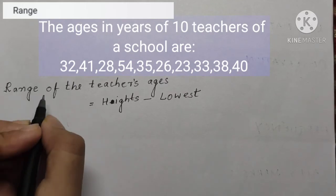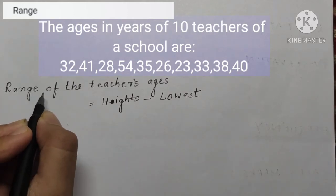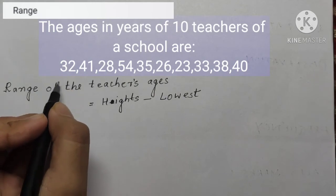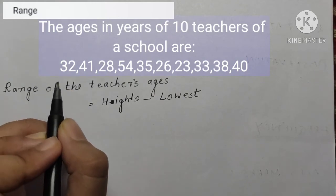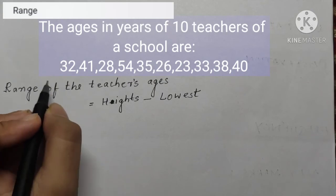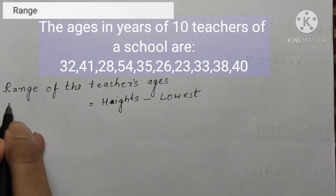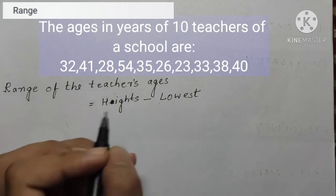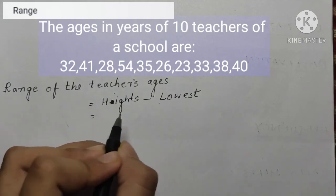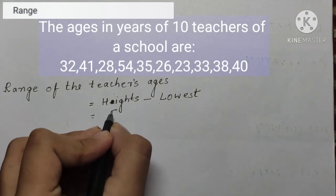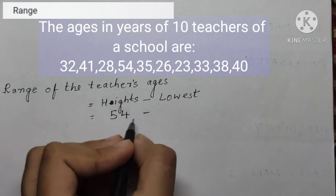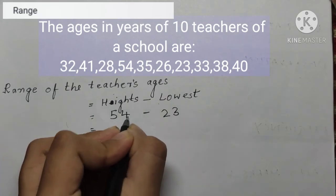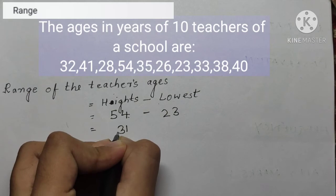Example: the ages in years of 10 teachers of a school are 32, 41, 28, 54, 35, 26, 23, 33, 38, and 40. Find the range of the ages. Range equals highest minus lowest. The highest value is 54 and the lowest is 23. So range equals 54 minus 23, which equals 31 years.